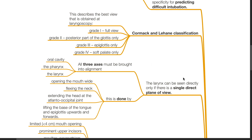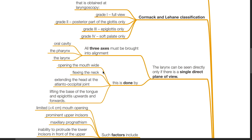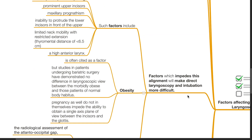The larynx can be seen directly only if there is a single direct plane of view. All three axes must be brought into alignment: the axis of the oral cavity, the pharynx, and the larynx. This is done by opening the mouth wide, flexing the neck, extending the head at the atlanto-occipital joint, and lifting the base of the tongue and epiglottis upwards and forwards in direct laryngoscopy.